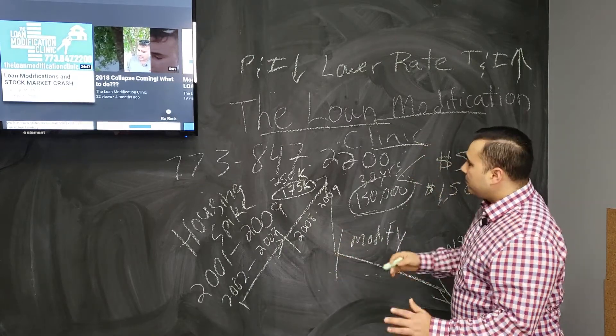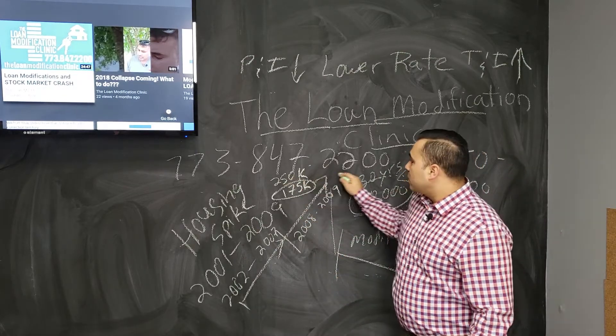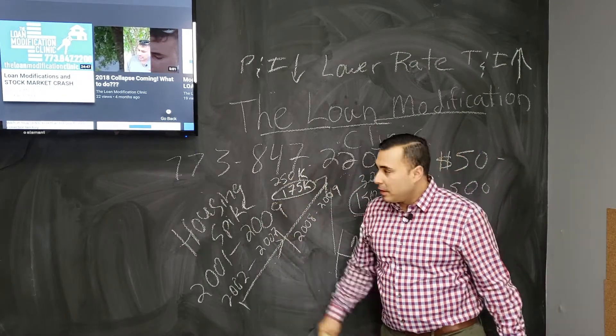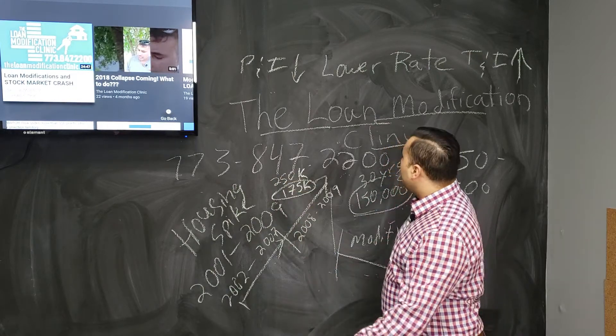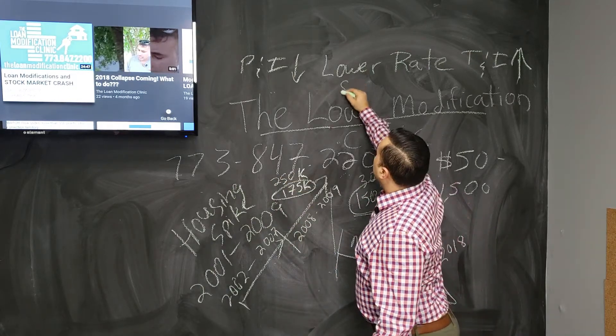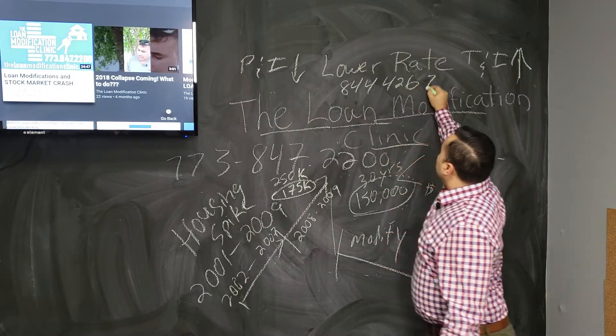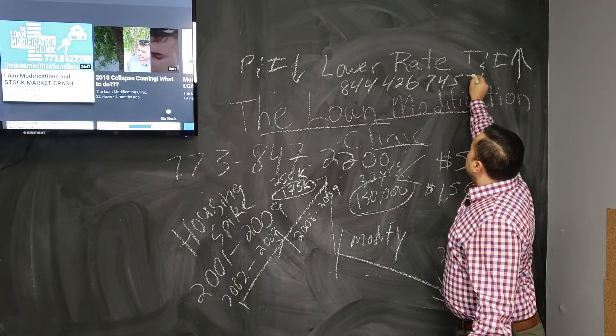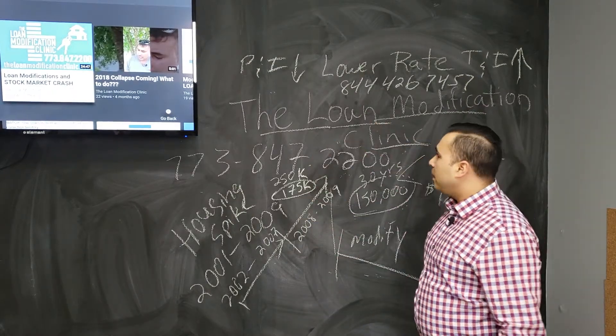That's why you have to call the number 773-847-2200 and set up the appointment. I know it's a local number, but you could call that number anywhere you're located. We also have the 844-426-7457. Our wall is so fresh, we just got this wall done right now.